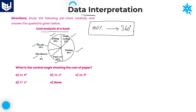See the first question. What is the central angle showing the cost of paper? We need to calculate the cost of paper angle. Looking at the pie chart, paper cost is 16%. We know that 100% is equal to 360 degrees, so what is the 16% value in degrees? Paper cost is 16% — that is equal to how many degrees?